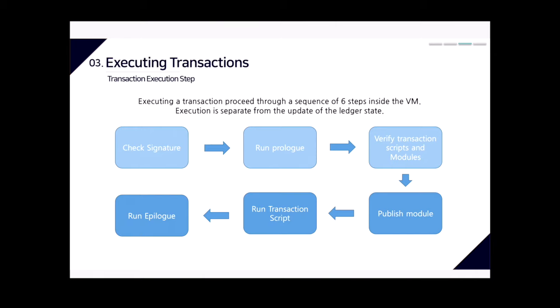Executing a transaction proceeds through a sequence of six steps inside the virtual machine. Execution is separate from the update of the ledger state. The steps are: check signature, run prologue, verify transaction scripts and modules, publish module, run transaction script, and run epilogue.